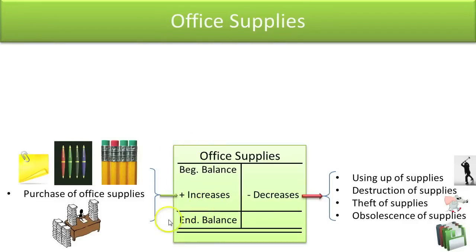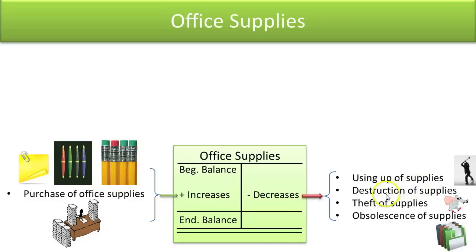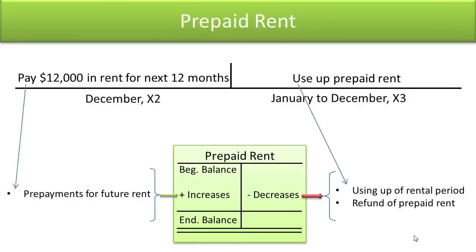Office supplies are products in your business that help you run it — post-it notes, pens, pencils, paper, things like that. When you buy those items, the office supplies account goes up because it's an asset that will provide future benefit. It decreases if you use up the supplies, if they're destroyed in a fire, stolen, or become obsolete and no longer useful to you.